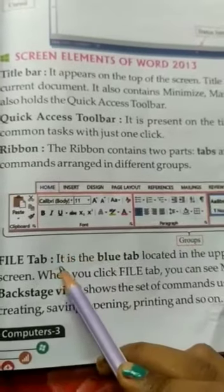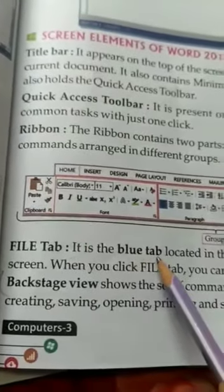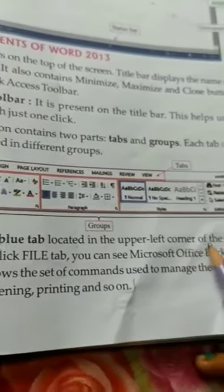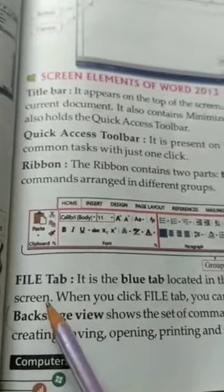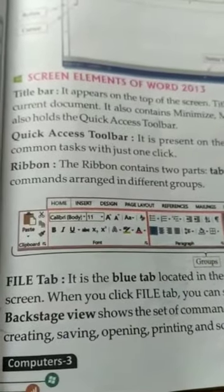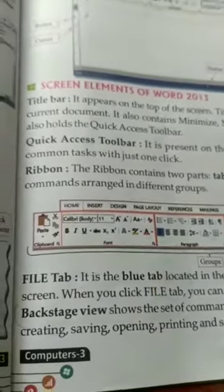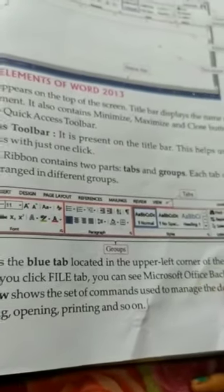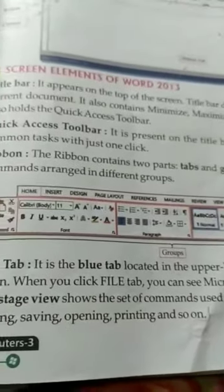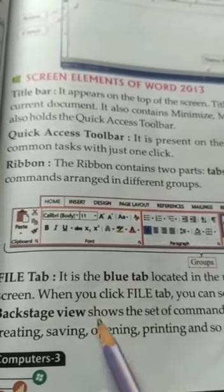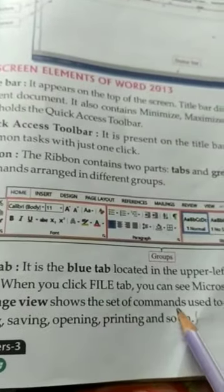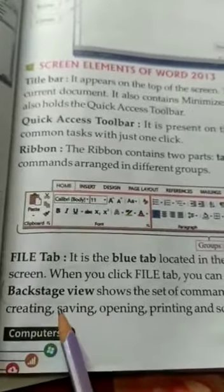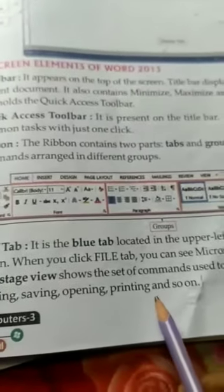File tab — it is the blue tab located in the upper left corner of the Word 2013 screen. When you click the file tab, you can see Microsoft Backstage View. Backstage View shows the set of commands used to manage documents like creating, saving, opening, printing and so on.